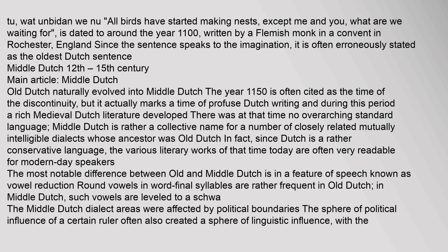Old Dutch naturally evolved into Middle Dutch. The year 1150 is often cited as the time of discontinuity, but it actually marks a time of profuse Dutch writing, during which a rich medieval Dutch literature developed. There was at that time no overarching standard language; Middle Dutch is rather a collective name for a number of closely related, mutually intelligible dialects whose ancestor was Old Dutch. Since Dutch is a rather conservative language, many literary works of that time are still very readable for modern-day speakers. The most notable difference between Old and Middle Dutch is vowel reduction: round vowels in word-final syllables, frequent in Old Dutch, are leveled to a schwa in Middle Dutch.